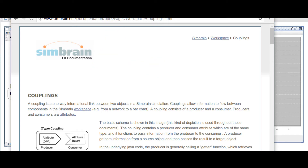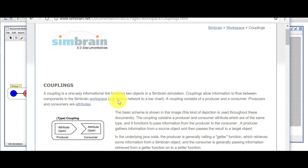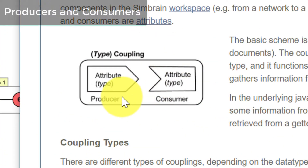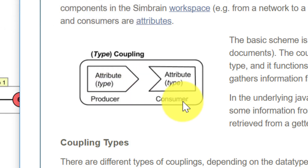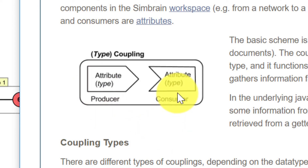The basic idea with a coupling is that it is a pair that has a producer and a consumer, represented with this picture here. Producers and consumers are both what we call attributes. So it's a pair of attributes, one of which produces some value and the other which consumes some value.